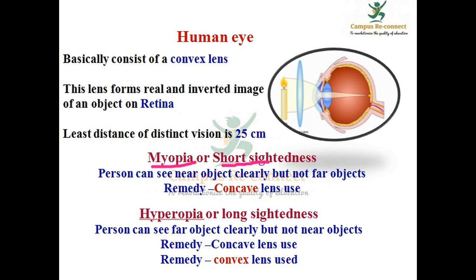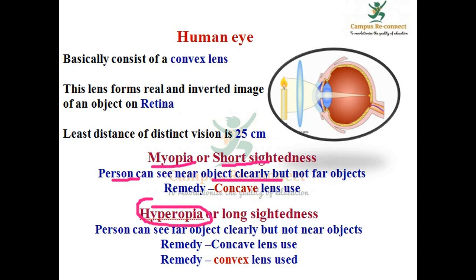Myopia is short-sightedness. The person can see near objects clearly but not distant ones. Concave lens is used to correct myopia. The other condition — the person cannot see near objects clearly. Convex lens is used to correct this condition.